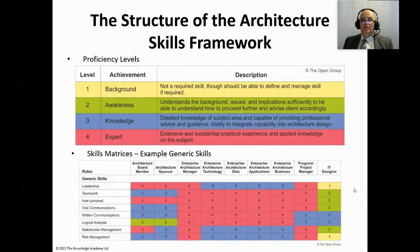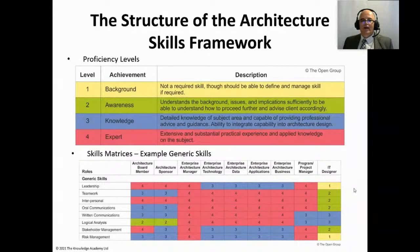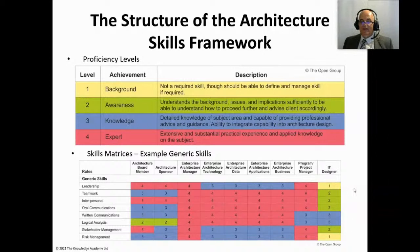The four proficiency levels are: Level 1 — Background: no required skill, though the person should be able to define and manage the skill if required. Level 2 — Awareness: understands the background issues and implications sufficiently to understand how to proceed further and advise the client accordingly. Level 3 — Knowledge: detailed knowledge of the subject area and capability to provide professional advice and guidance, and ability to integrate capability into architecture design.